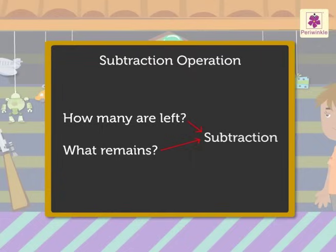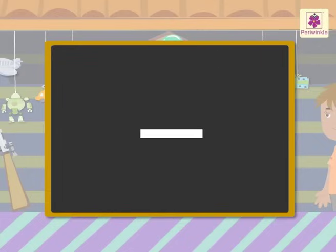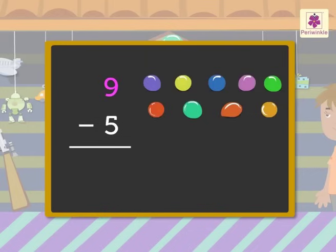Now let's learn to read a subtraction sentence using the subtraction sign minus. Nine minus five is equal to four.